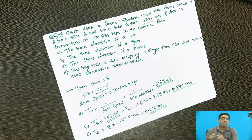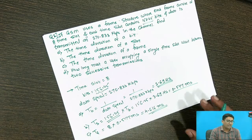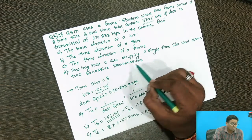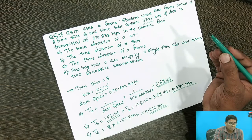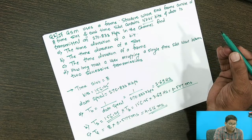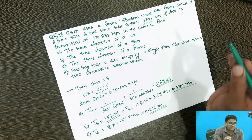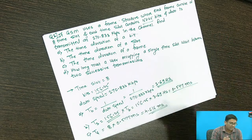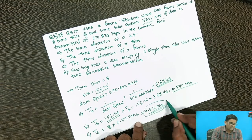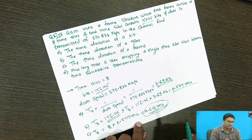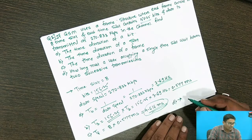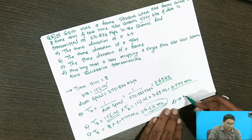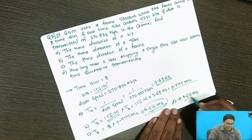Question d asks: how long must a user occupying a single time slot wait between two successive transmissions? The answer is 4.616 milliseconds, which is also the frame duration.